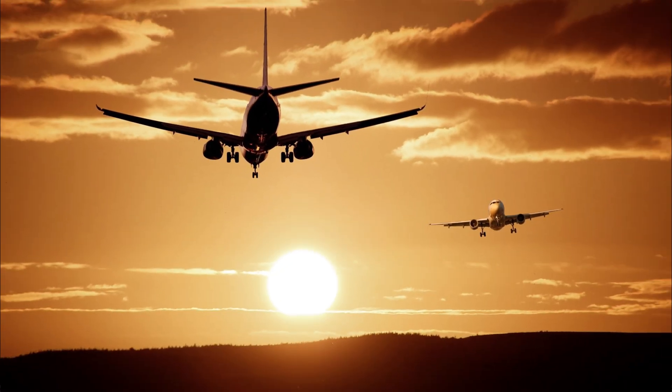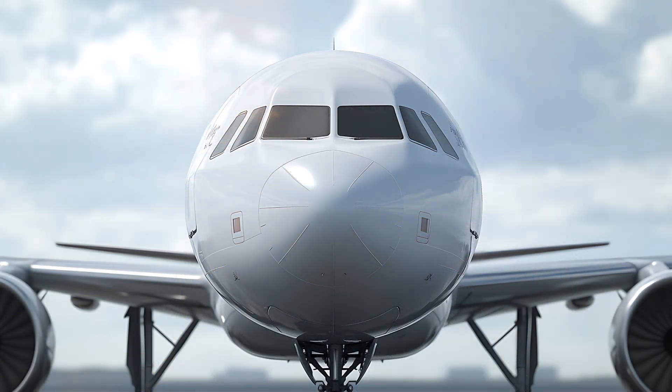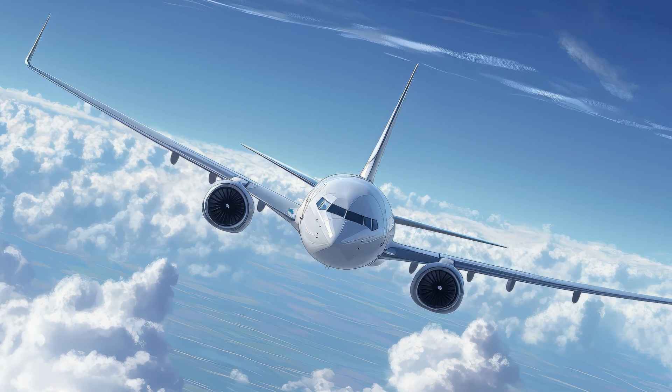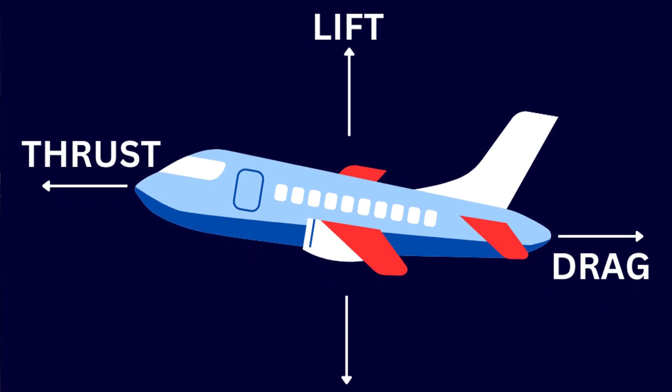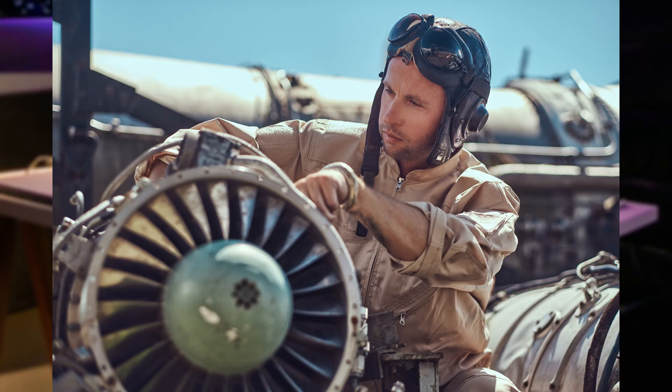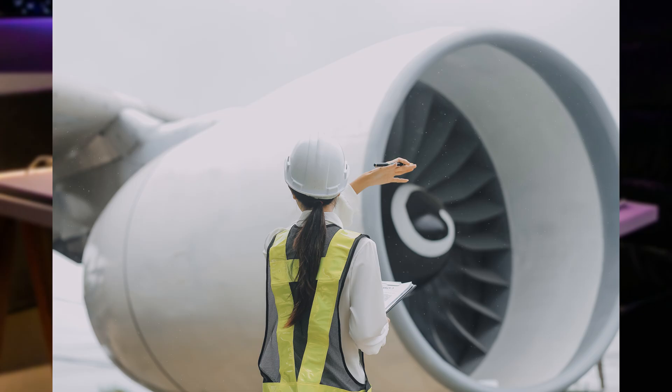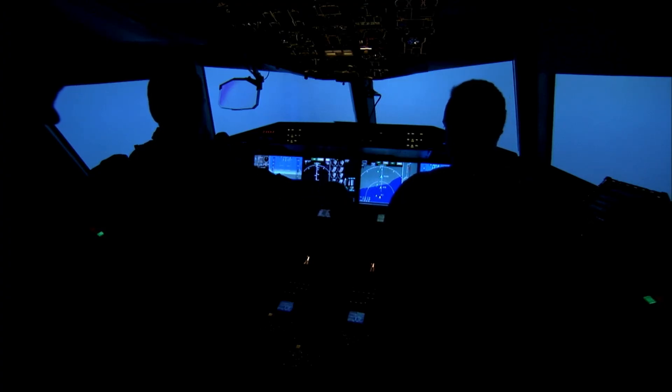How do airplanes fly? The complete science of lift, thrust, and control. Flying is one of the greatest achievements of human engineering, yet for many people it remains a mystery. How can a massive metal machine, often weighing hundreds of tons, lift off the ground and stay in the air? What forces make flight possible? At first glance it seems almost magical, but in reality, flying is based on well-understood principles of physics. The science behind flight is a combination of aerodynamics, engineering, and precise control mechanisms that allow pilots to maneuver aircraft with incredible precision.